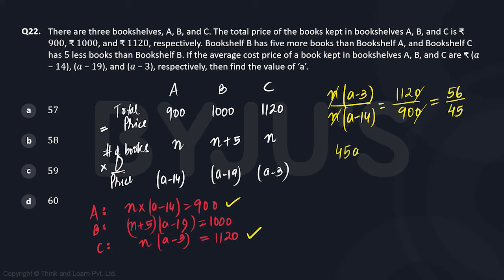If you cross multiply, we will have 45a - 45×3, which is 135. This equals 56a - 56×14. 56×14 can be treated as 56×10 + 56×4, so 560 + 224, which is 784.